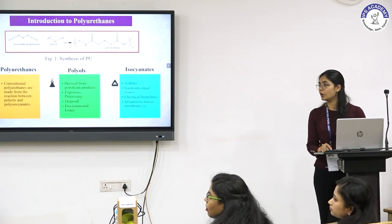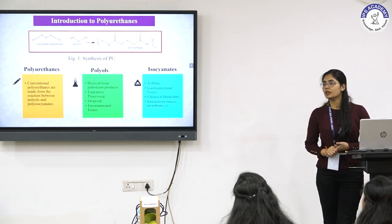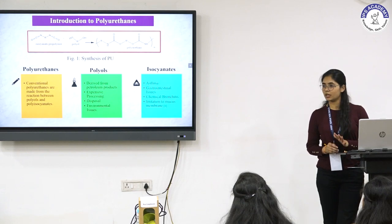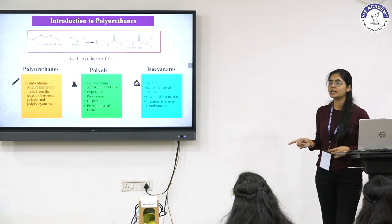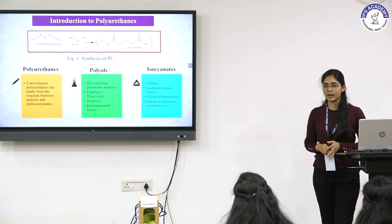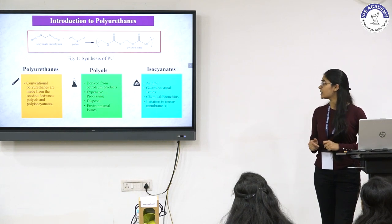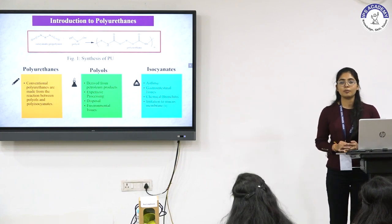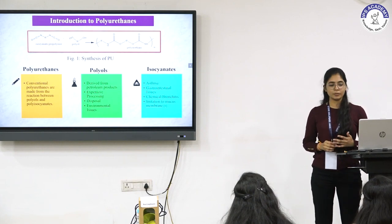Polyurethanes represent one of the most important classes of polymers. They are the sixth most widely used polymers in different areas of industries. Conventionally, they are synthesized using polyisocyanates and polyols. When combined together, this leads to the formation of NHCOO linkage throughout the polymeric backbone, which is also called the carbamate or urethane linkage. There are multiple problems associated with these polyurethanes and their raw materials.